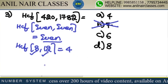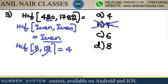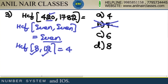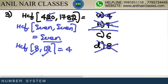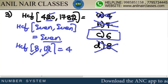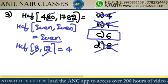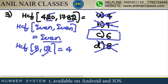HCF of 8 and 12: both divisible by 4, so the answer is divisible by 4. Now, 420 — last two digits 20 — is divisible by 4, but 1782 — last two digits 82 — is not divisible by 4. So the answer cannot be 4 or 8. The answer is 6.